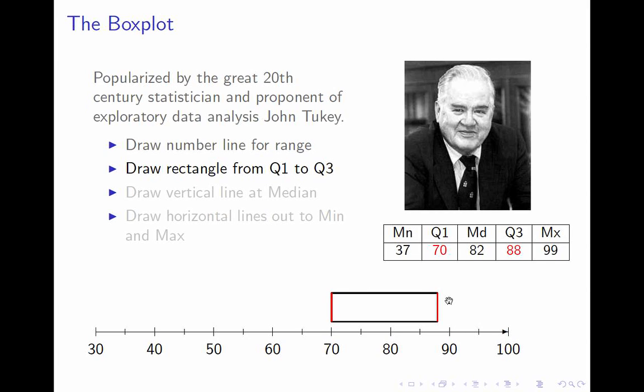As always, the x-axis is values of the variable. So 70 and 88 are values of the variable. They're specific percentiles.